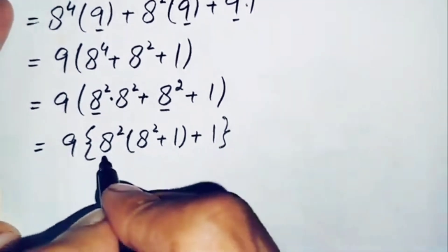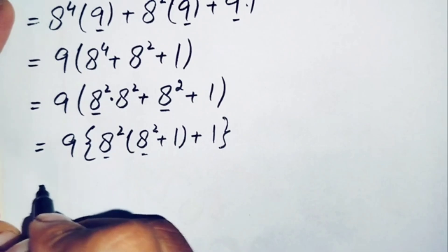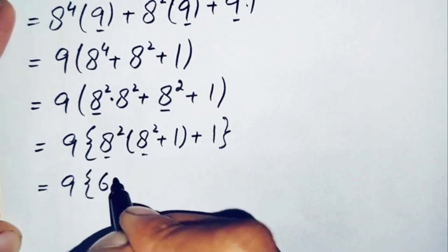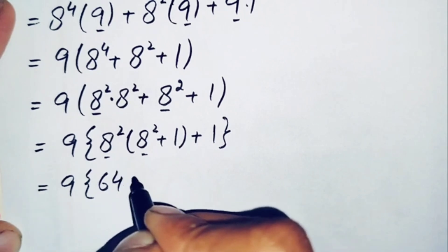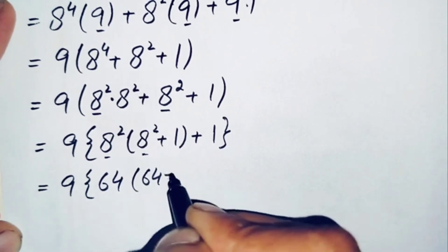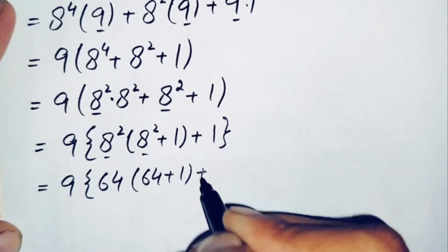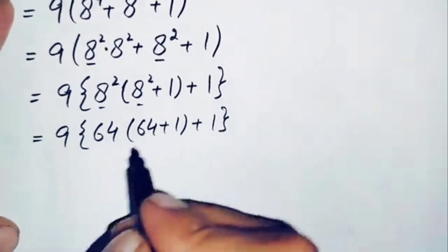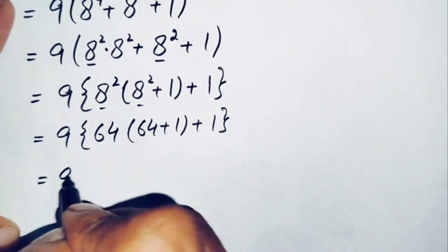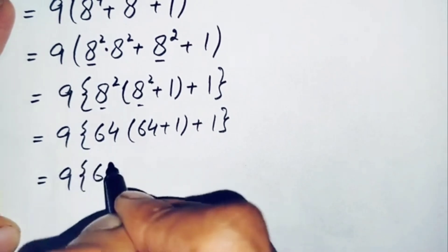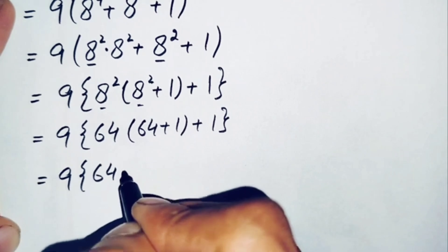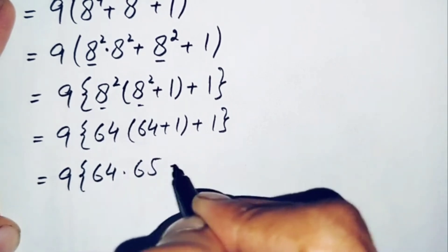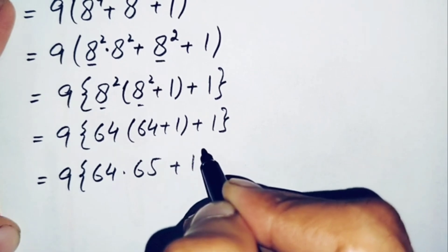Now we substitute the value of a squared. Since a equals 8, 8 times 8 is 64, so we replace a squared with 64 in both places. This will become 9 times 64 times (64 plus 1) plus 1. Now 64 plus 1 is 65, so this becomes 9 times 64 times (65 plus 1).